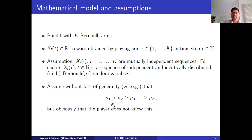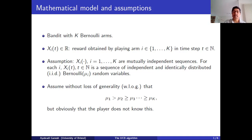Of course, the player doesn't know the numbering of the arms. Otherwise they would know which is the best arm and there would be nothing for them to learn. So the player doesn't know the numbering — they are just presented with these different arms and have to try them out and decide. But for the purposes of analysis, we assume that the arms are ordered in this way, so sitting outside the system, we know the ordering of the arms.